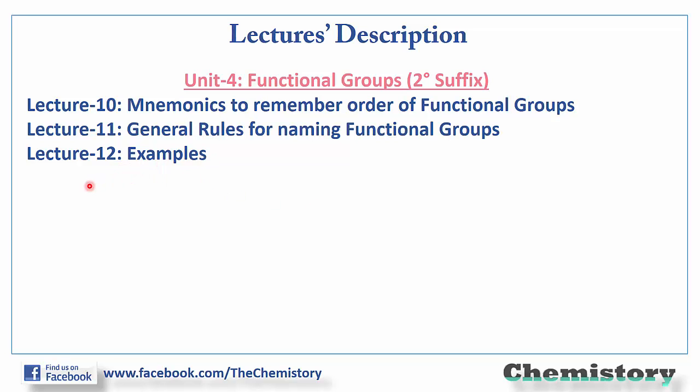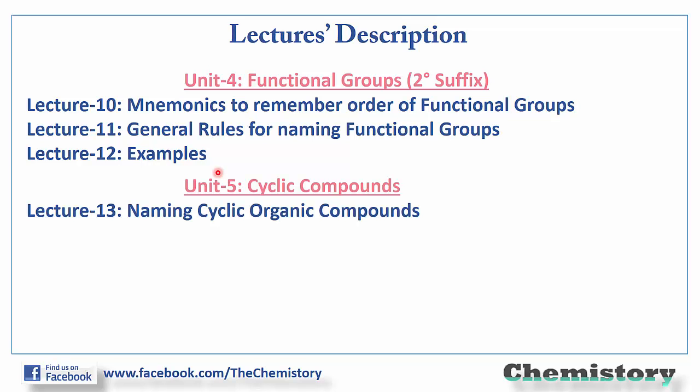Unit 5 is nomenclature of cyclic organic compounds, which includes cyclo compounds, bicyclos, spiro, aromatic compounds, etc.